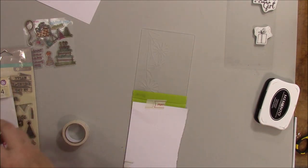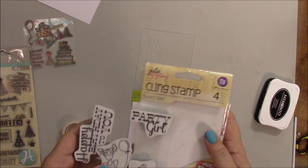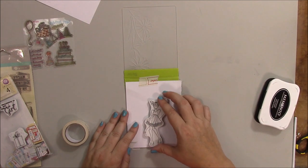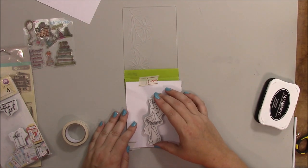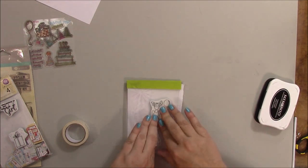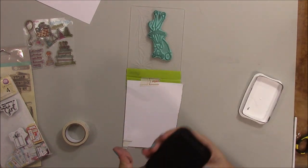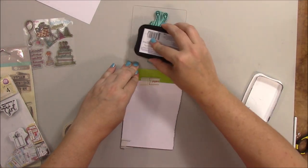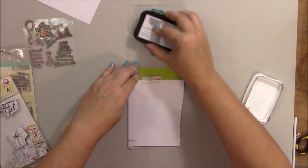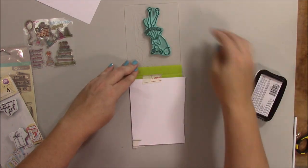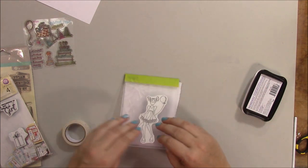And we're going to use this Julie Nutting Party Girl stamp set. Okay. Let's put our girl on there. Open it up. Whoops. Got ink on my finger. Ink her up and stamp her down.